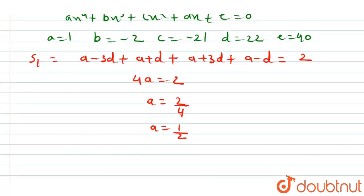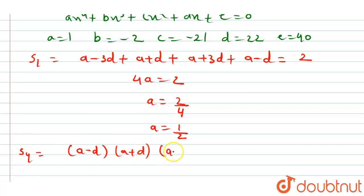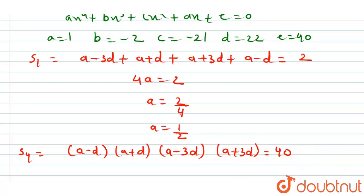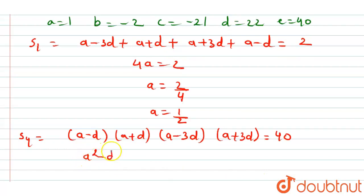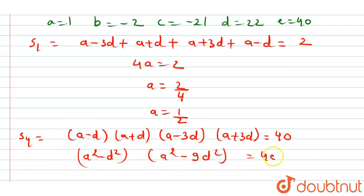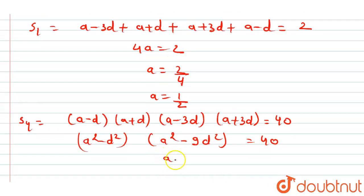Next, S4 is the product of roots: (a - d)(a + d)(a - 3d)(a + 3d) = e/a = 40. This simplifies to (a² - d²)(a² - 9d²) = 40.